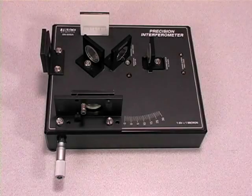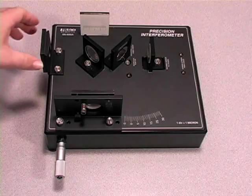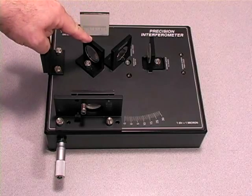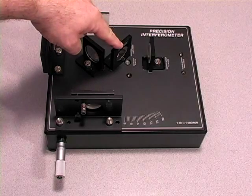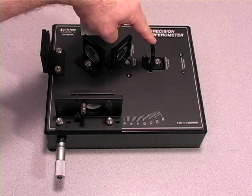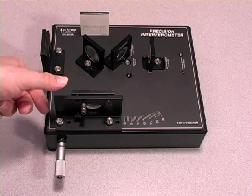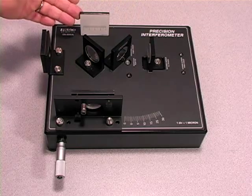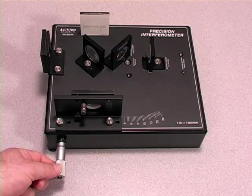For Michelson interferometry, I'll be using the component holder with lens, the beam splitter, the compensator, the movable mirror, the adjustable mirror, and the screen. I'll be moving the movable mirror with the micrometer knob.